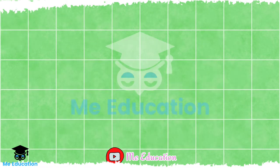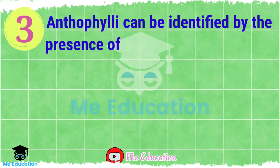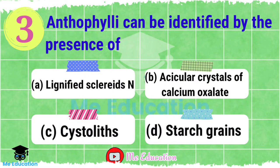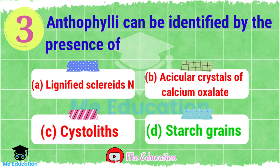Question number 3: Enthophyllic can be identified by the presence of — Option A: lignified scleroids; Option B: acicular crystals of calcium oxalate; Option C: cystoliths; Option D: starch grains. Pause the video and try to answer this question. The right answer is D, starch grains.